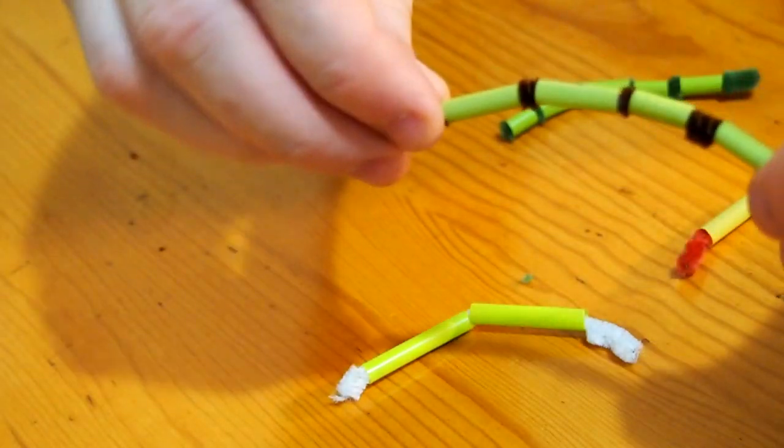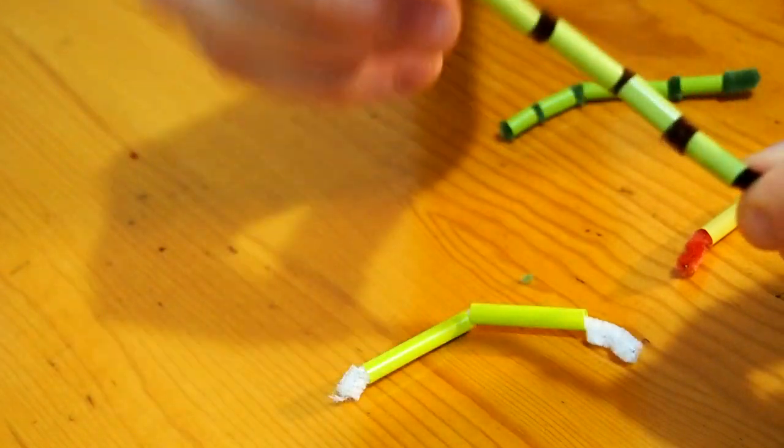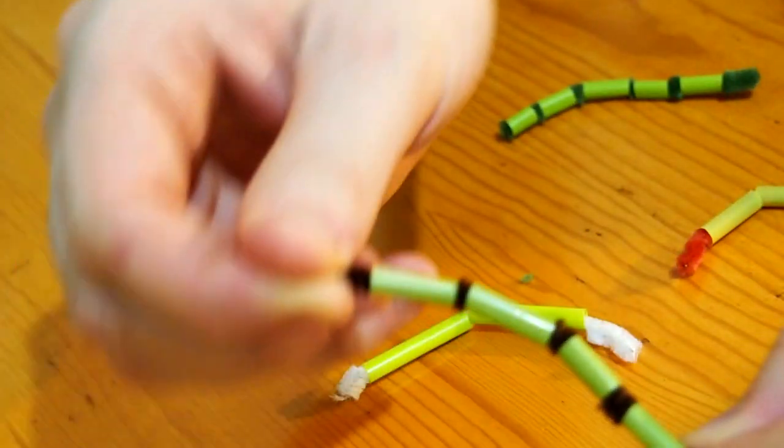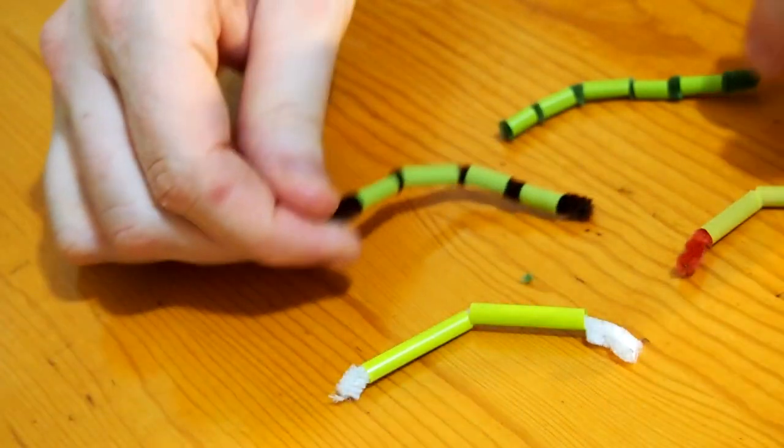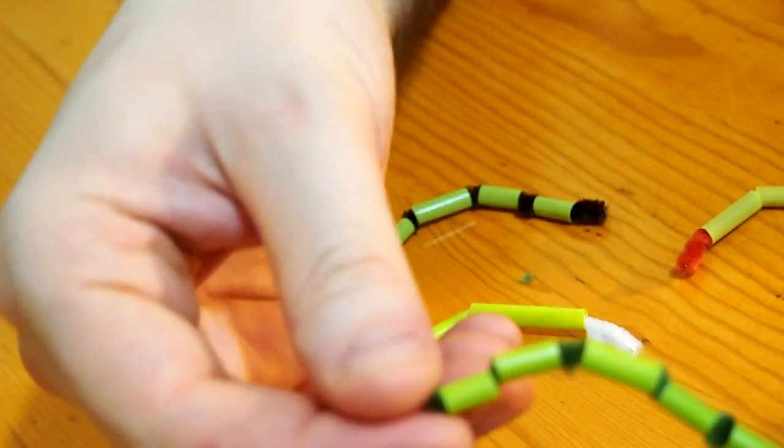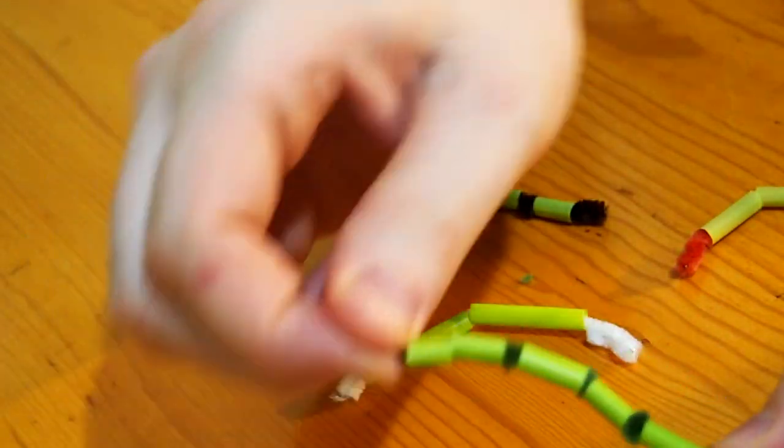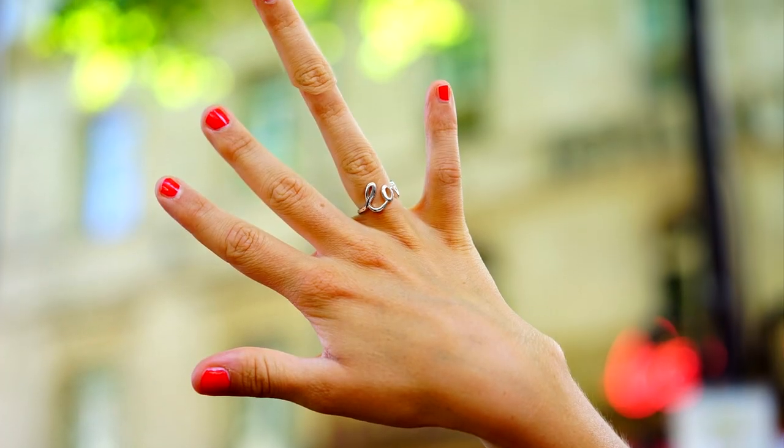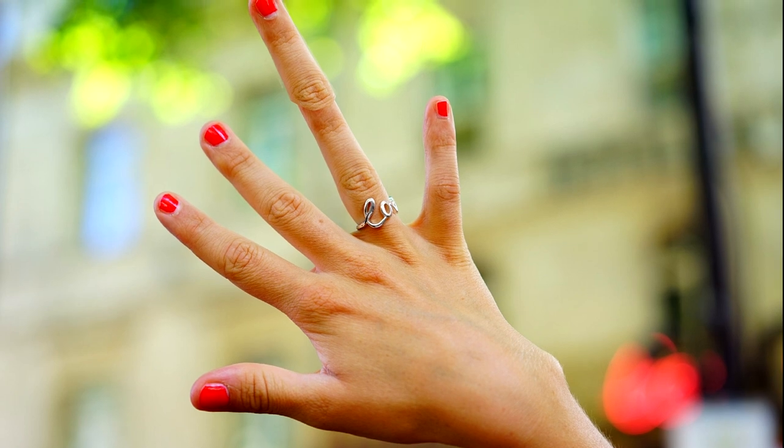The third toe has four knuckles and four sections. It's like lengthening your middle finger by a whole extra section. But we're not done yet. The fourth toe has five knuckles and five sections. Look at your ring finger. Now imagine it having two more sections beyond what you have. How cool would that be?